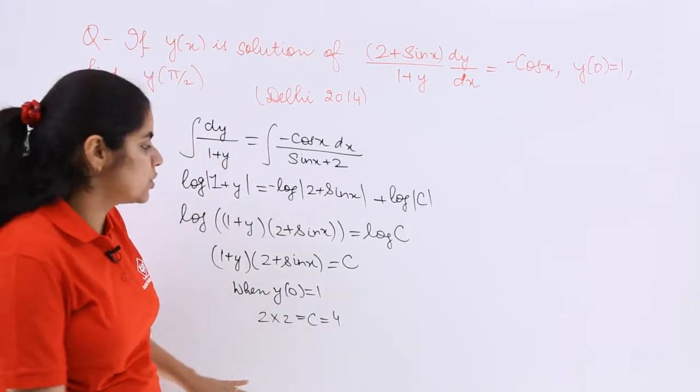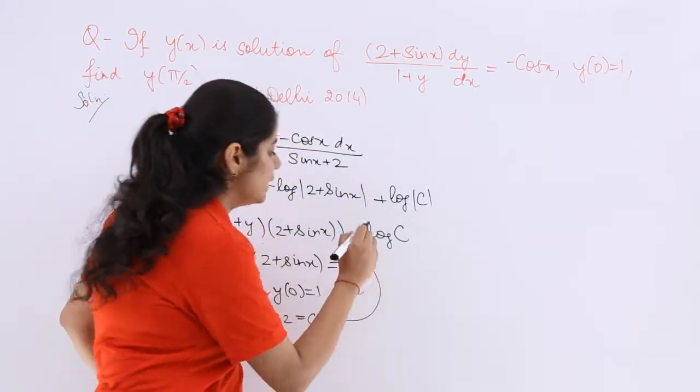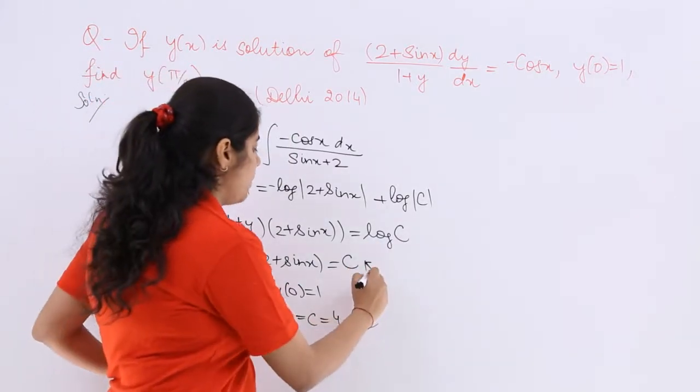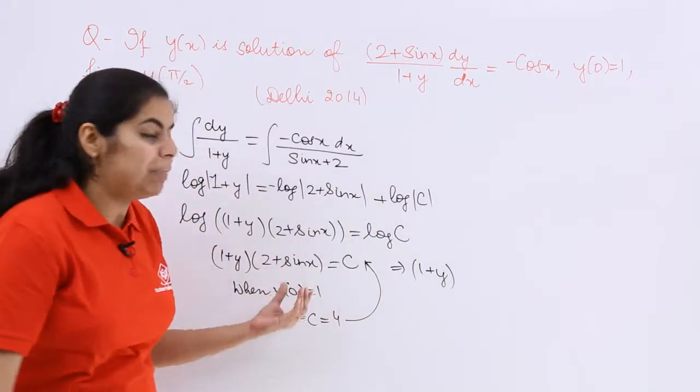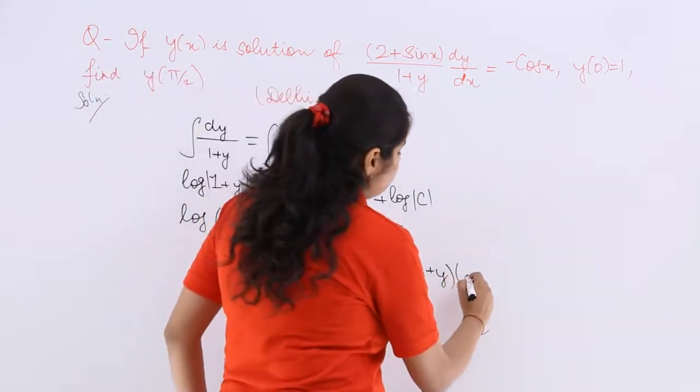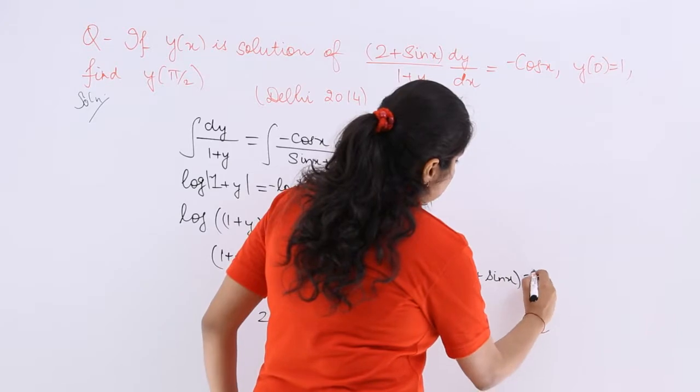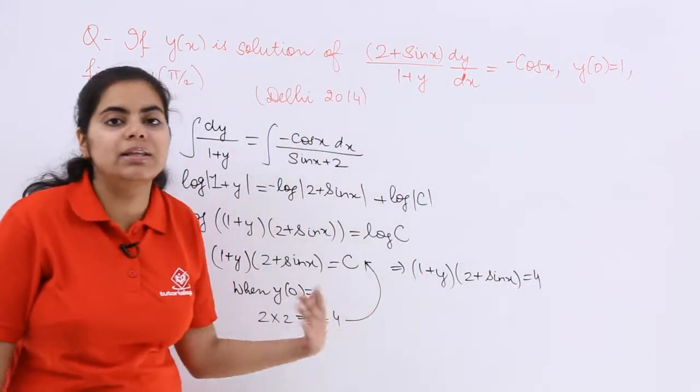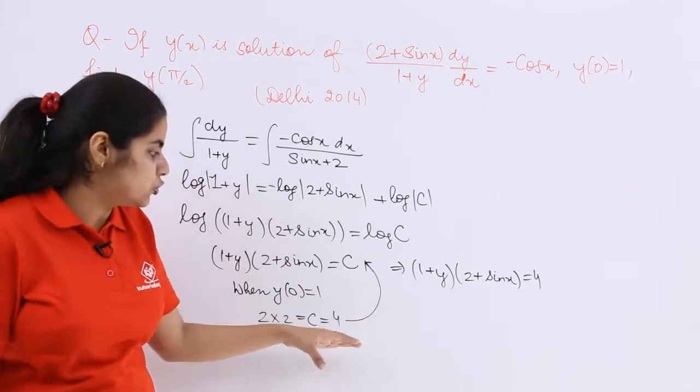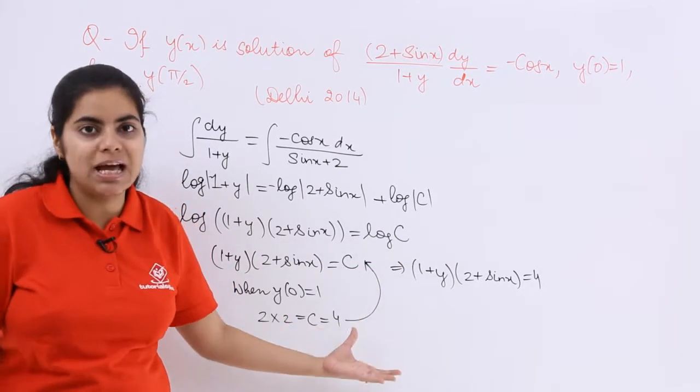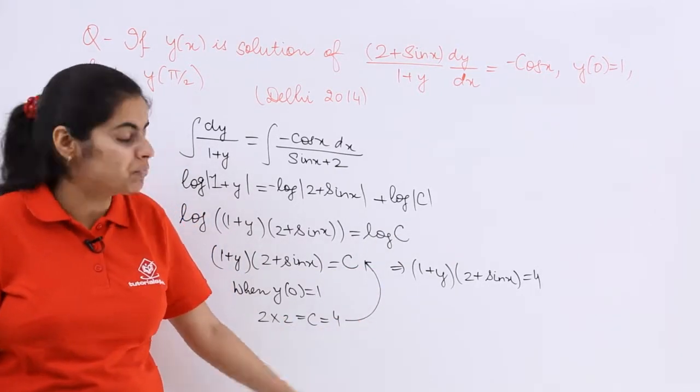So 2 into 2 is 4 and that is your c. Now this value of c which is 4 can be put back in this equation. So what happens is, I get 1 plus y multiplied by 2 plus sin x is equal to 4. I am not numbering the equations. You can when you have to present in the examination.